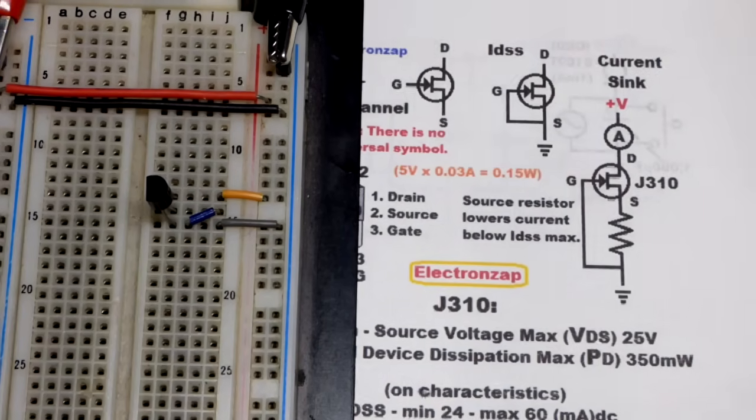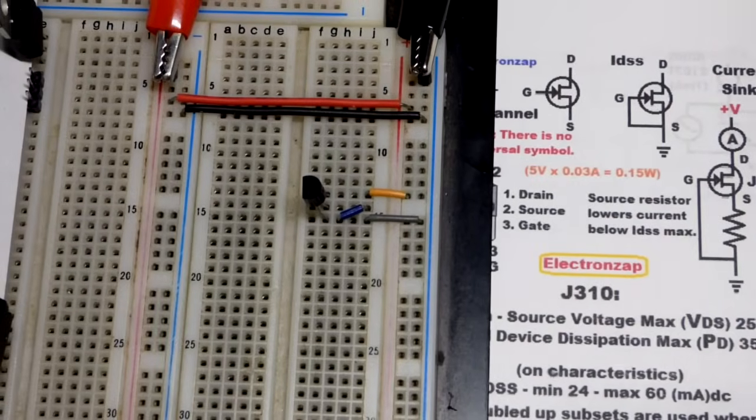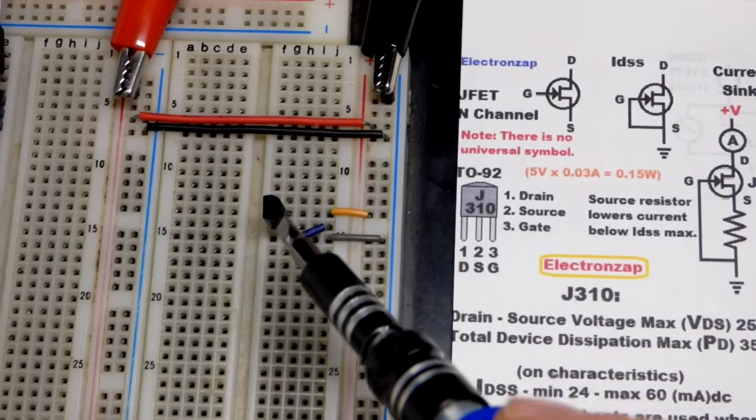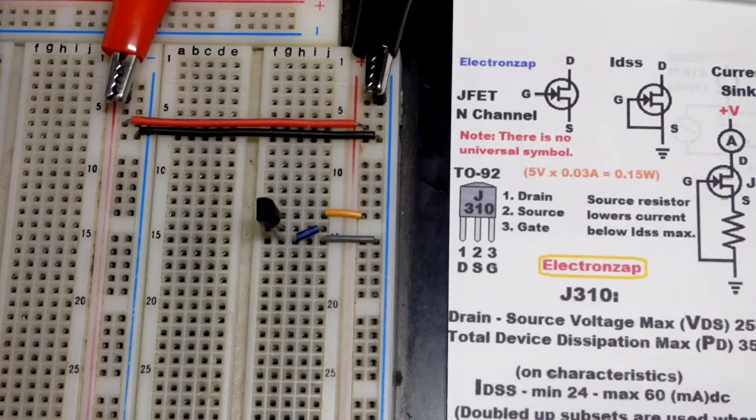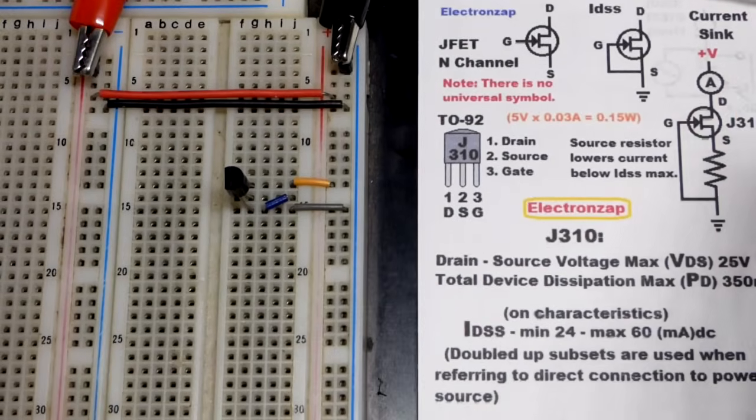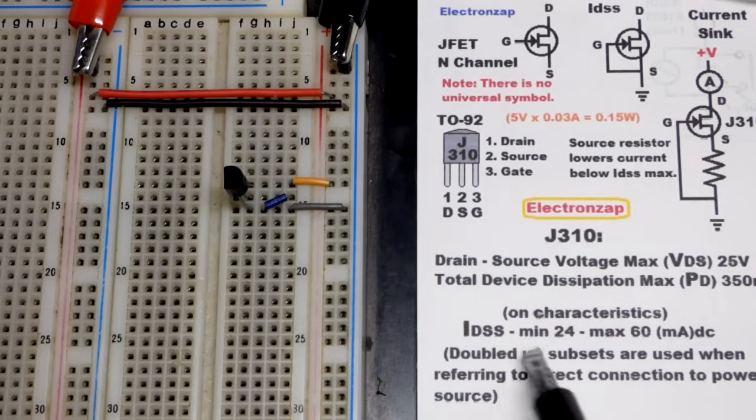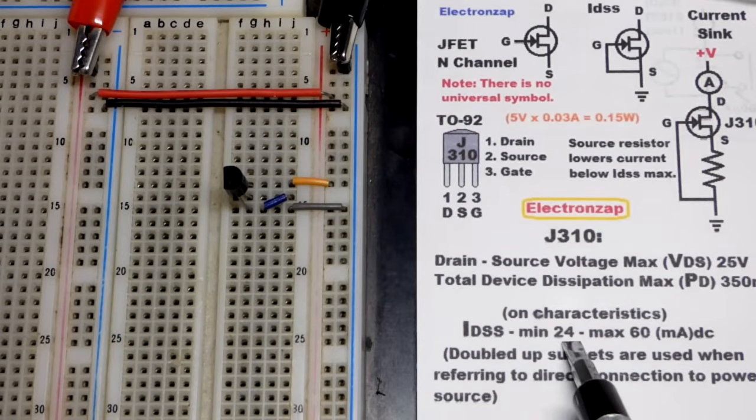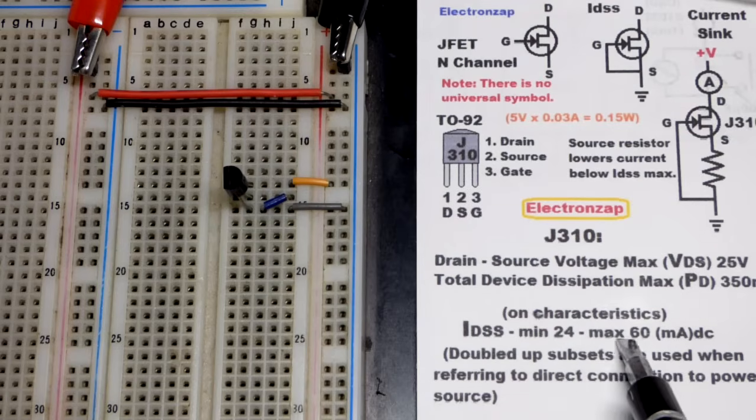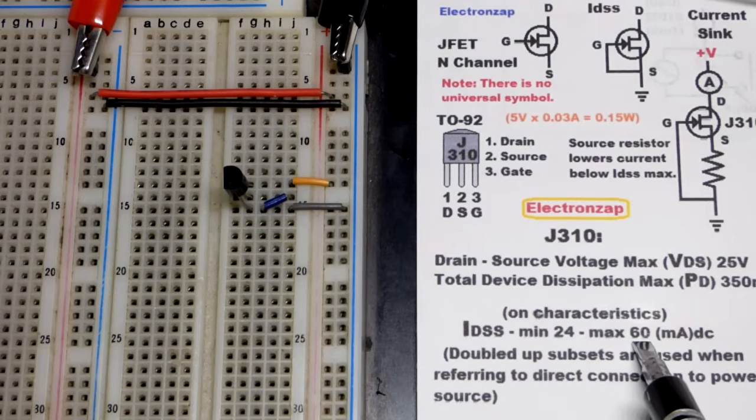That's just a test for this one component right there, the J310. The J310 will have a range of currents. So according to the data sheet that I looked at before, the IDSS may be down as low as 24 milliamps and maybe as high as 60 milliamps of current. So be aware of that.